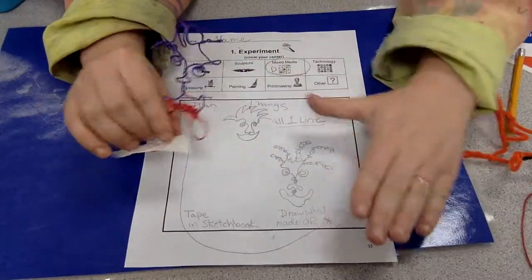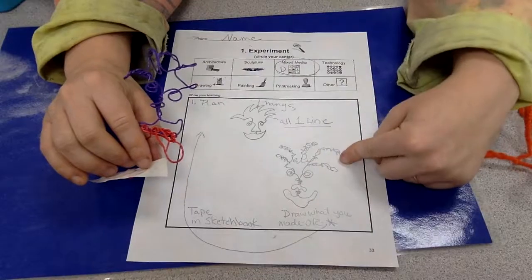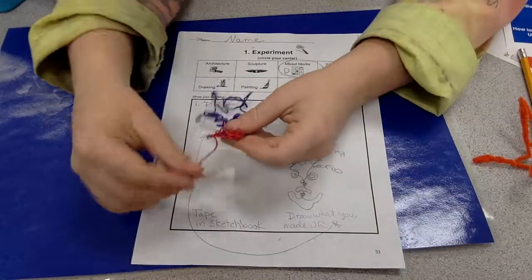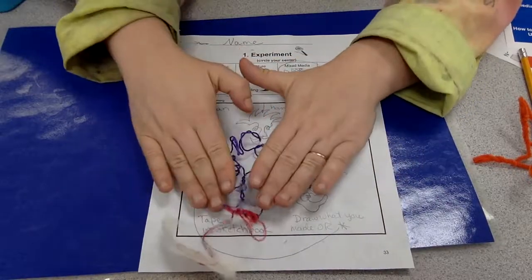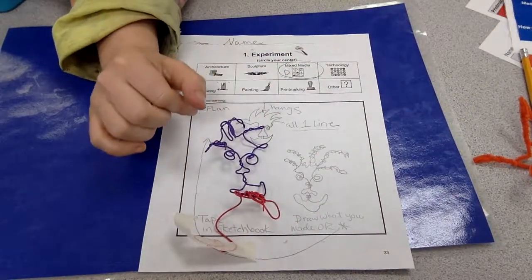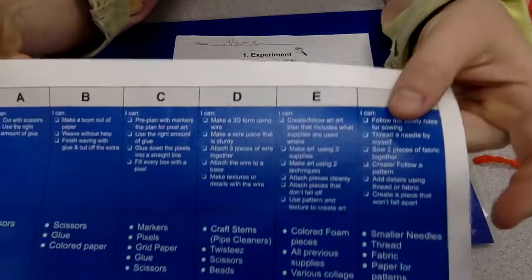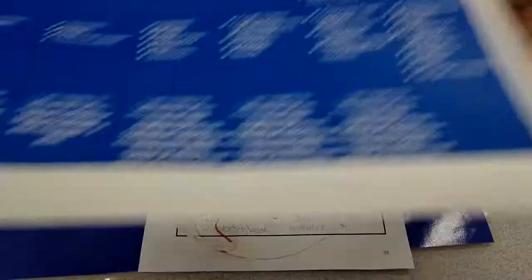Then in my sketchbook, I'm going to draw out what I made and if possible, I'm going to put what I made in my sketchbook. But before I flatten it, I need to show my teacher because remember, I have to make it so that it is 3D.